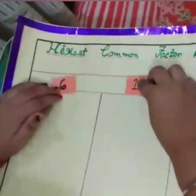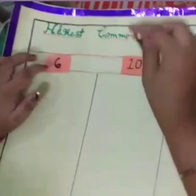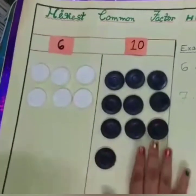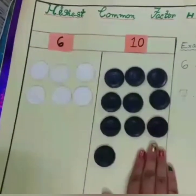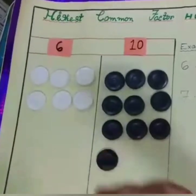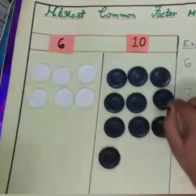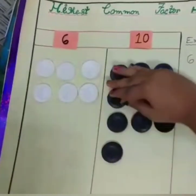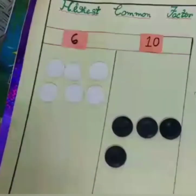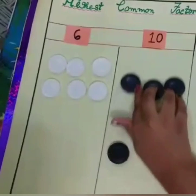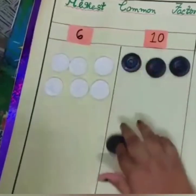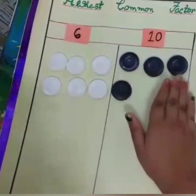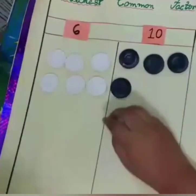My question is 6 and 10. So here are 6 coins and here are 10 coins. I will remove 6 coins. So here are 6 coins remaining, and here are 4 coins. So I will remove 4 coins.